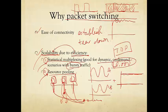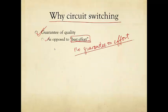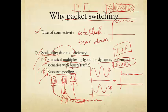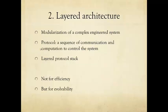In the end, what wins? The guarantee of quality from circuit switching, or the ease of connectivity plus scalability and efficiency from packet switching? As you might guess, ease of connectivity and scalability won the day — it pays to at least have a large network to start with, and then worry about quality of service using other methods. So packet switching won the day, although that wasn't entirely clear even all the way to the late 1990s.